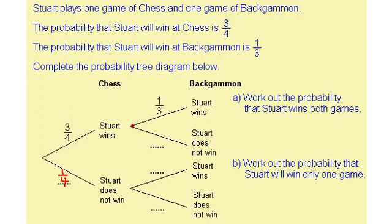We're also told that the probability that Stuart wins a game of backgammon is a third. Because the probabilities have to add up to 1, the probability that Stuart does not win a game of backgammon must be two thirds. This branch here is still Stuart winning backgammon or Stuart not winning backgammon, so the probabilities need to be the same — a third and two thirds.